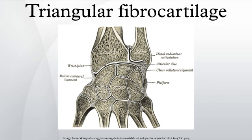The TFC is an articular disc that lies on the pole of the distal ulna. It has a triangular shape and a biconcave body. The periphery is thicker than its center. The central portion of the TFC is thin and consists of chondroid fibrocartilage, a type of tissue often seen in structures that can bear compressive loads. This central area is often so thin that it is translucent, and in some cases it is even absent.